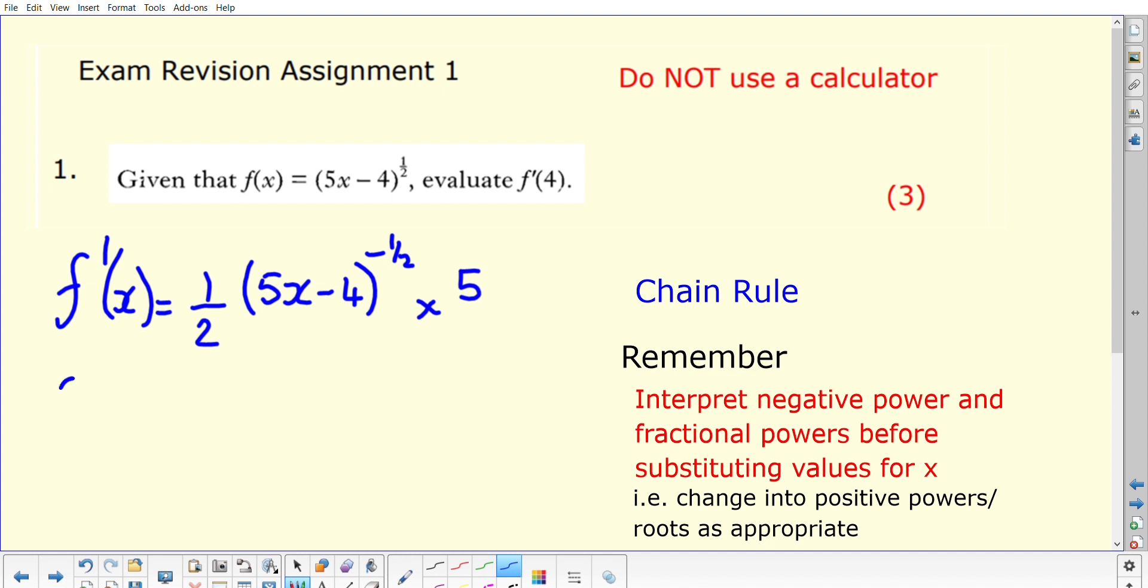If we put the 5 times the half together and write that at the front, we would have 5 halves - you leave it as 5 over 2, you don't write it as 2 and a half. And you've got this 5x minus 4 to the power minus a half.